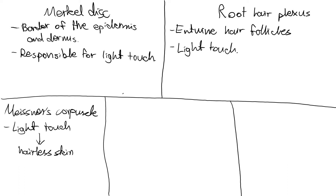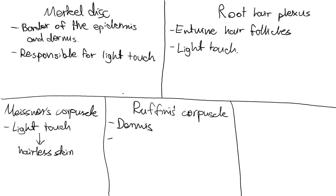Ruffini's corpuscles are the next nociceptor I'm going to talk about — and a nociceptor, if you haven't heard of this term before, is a term used to describe a pain receptor. Ruffini's corpuscles are present very deep within the skin — in the dermis — and they allow for the sensation of deep pressure and stretch. A good way to remember this: since they allow for deep pressure and stretch, they are located deep, within the dermis.